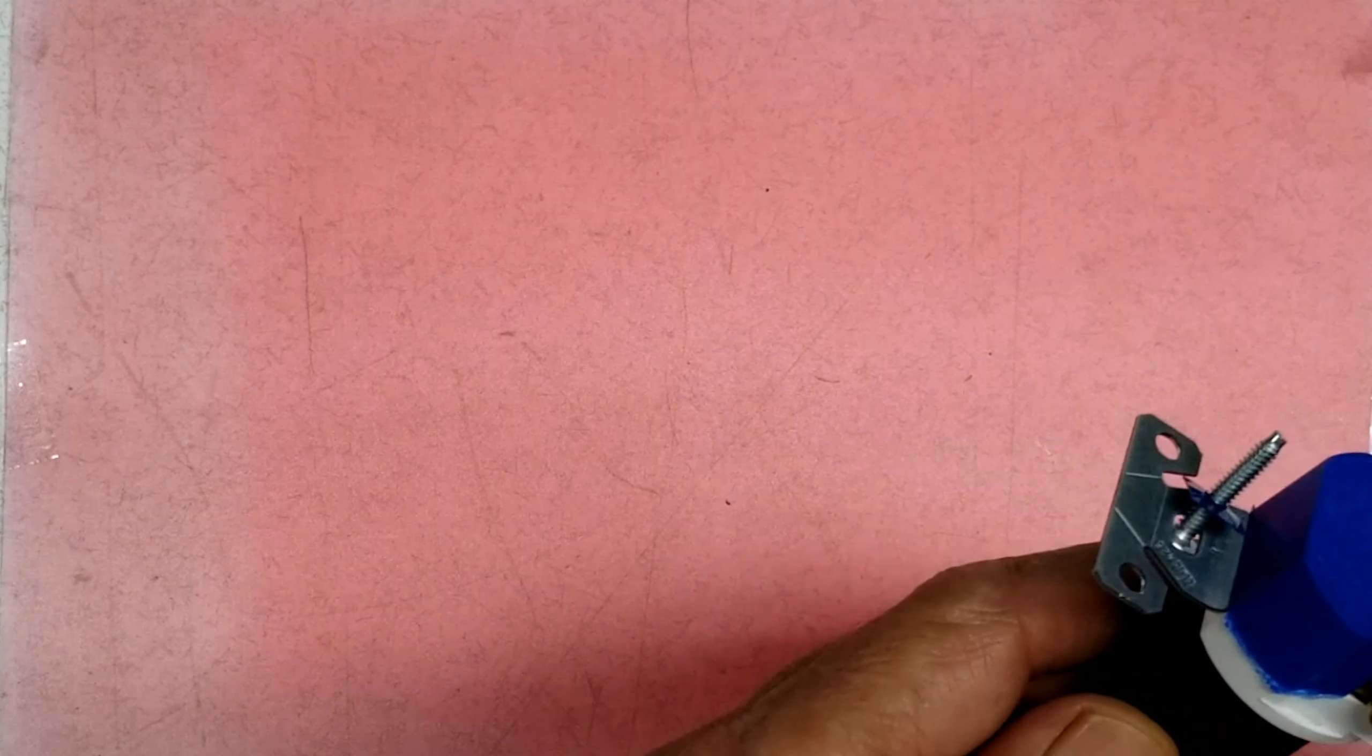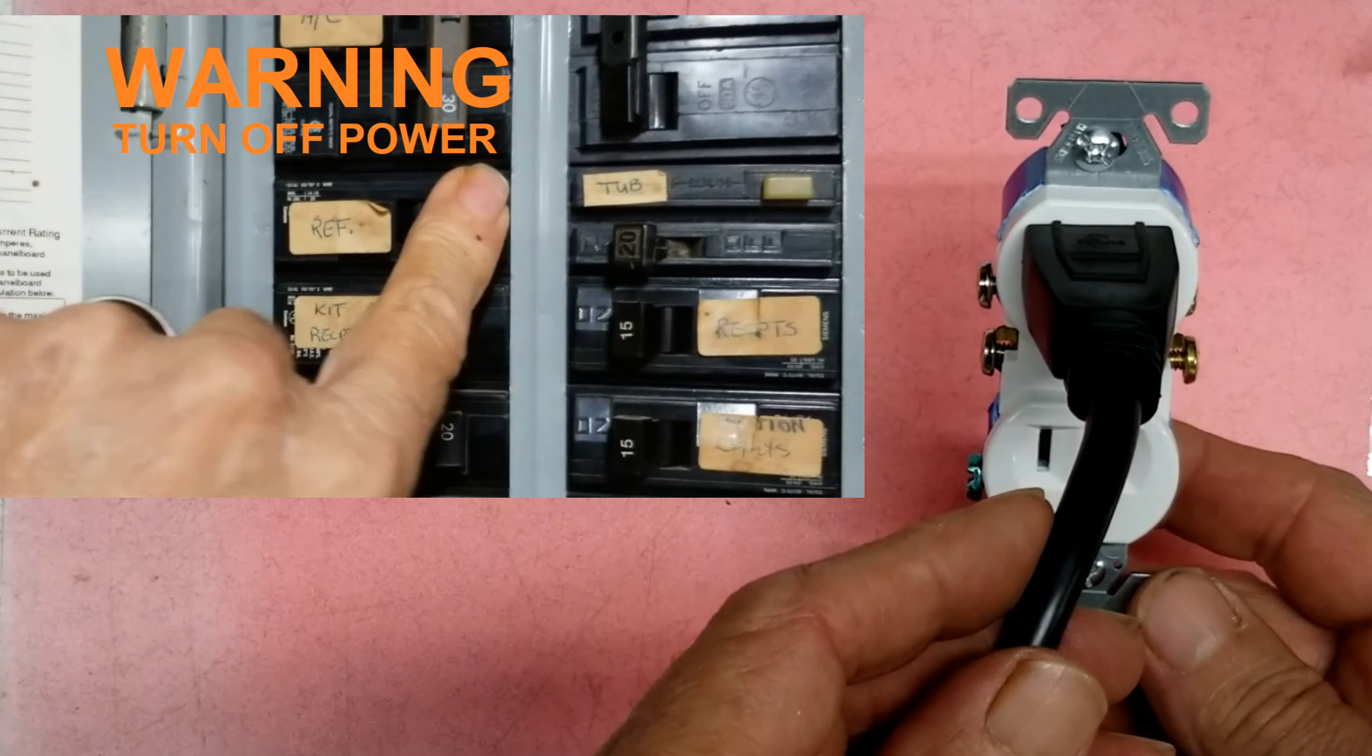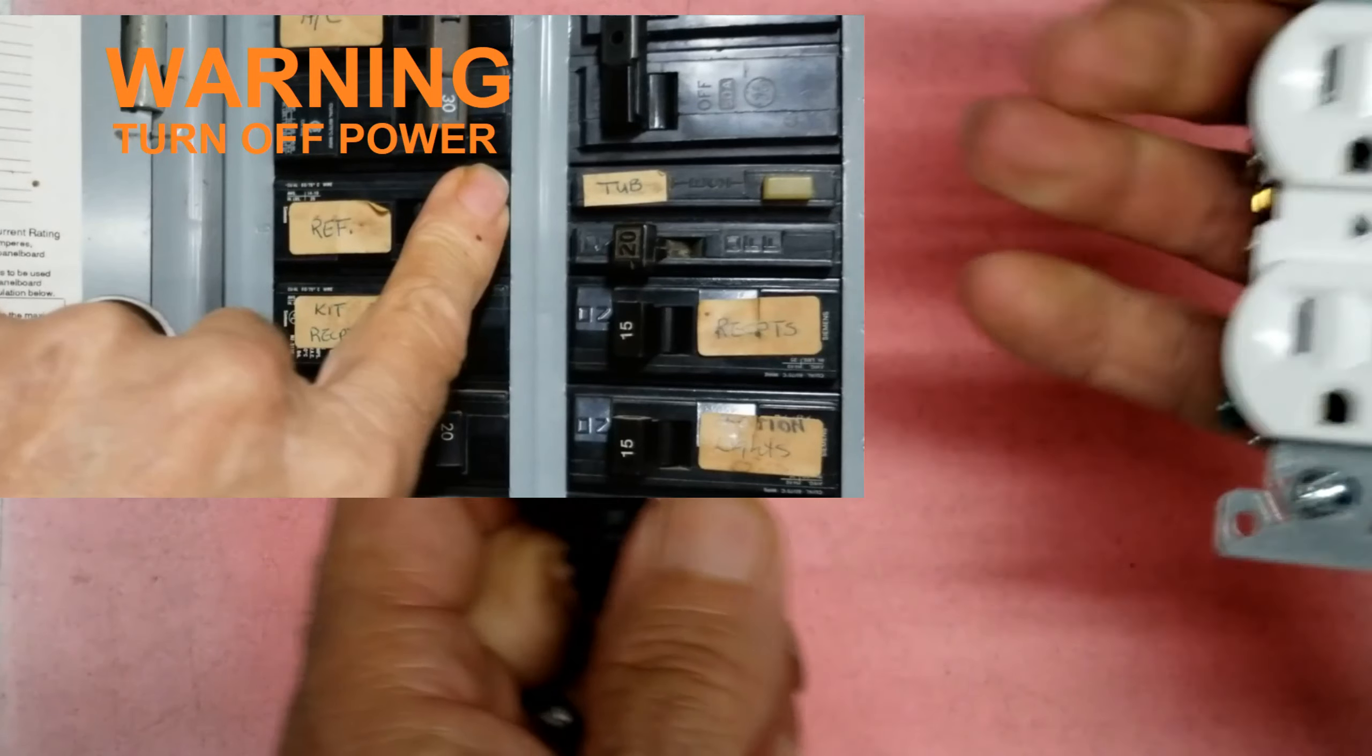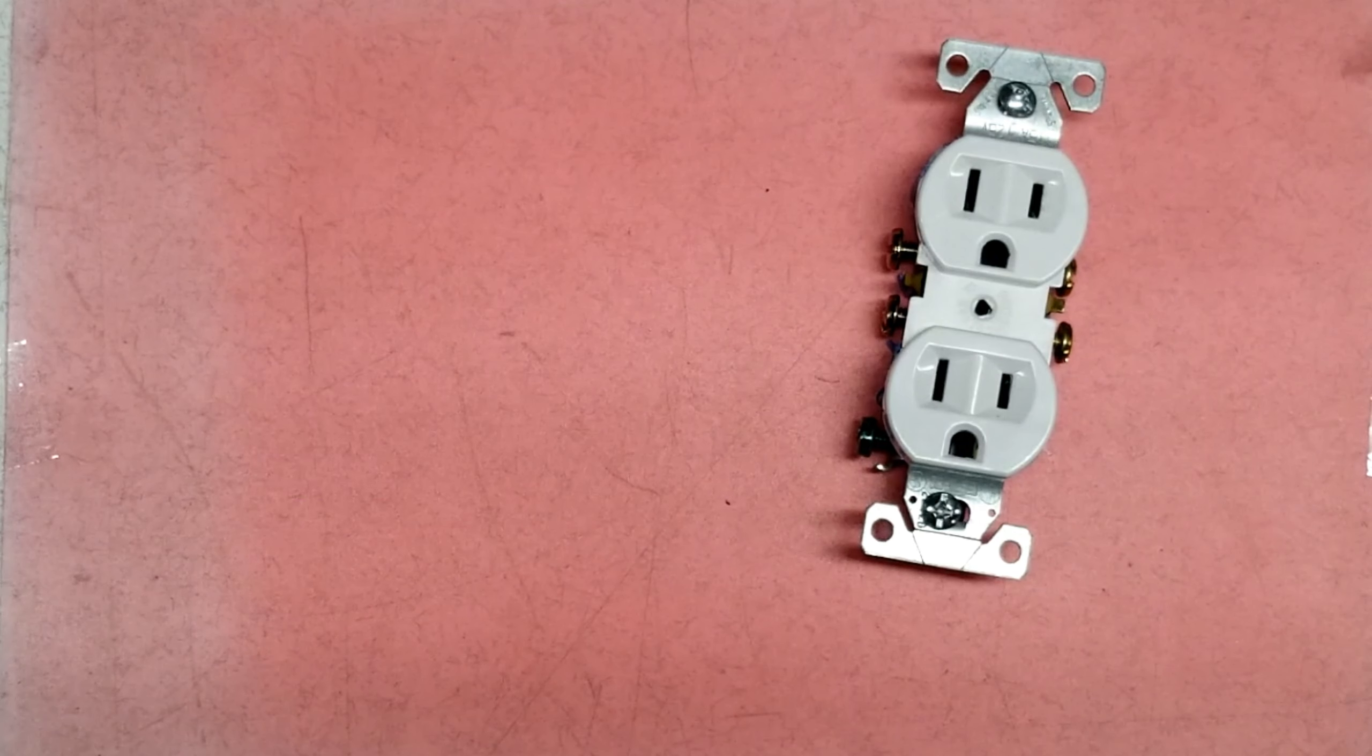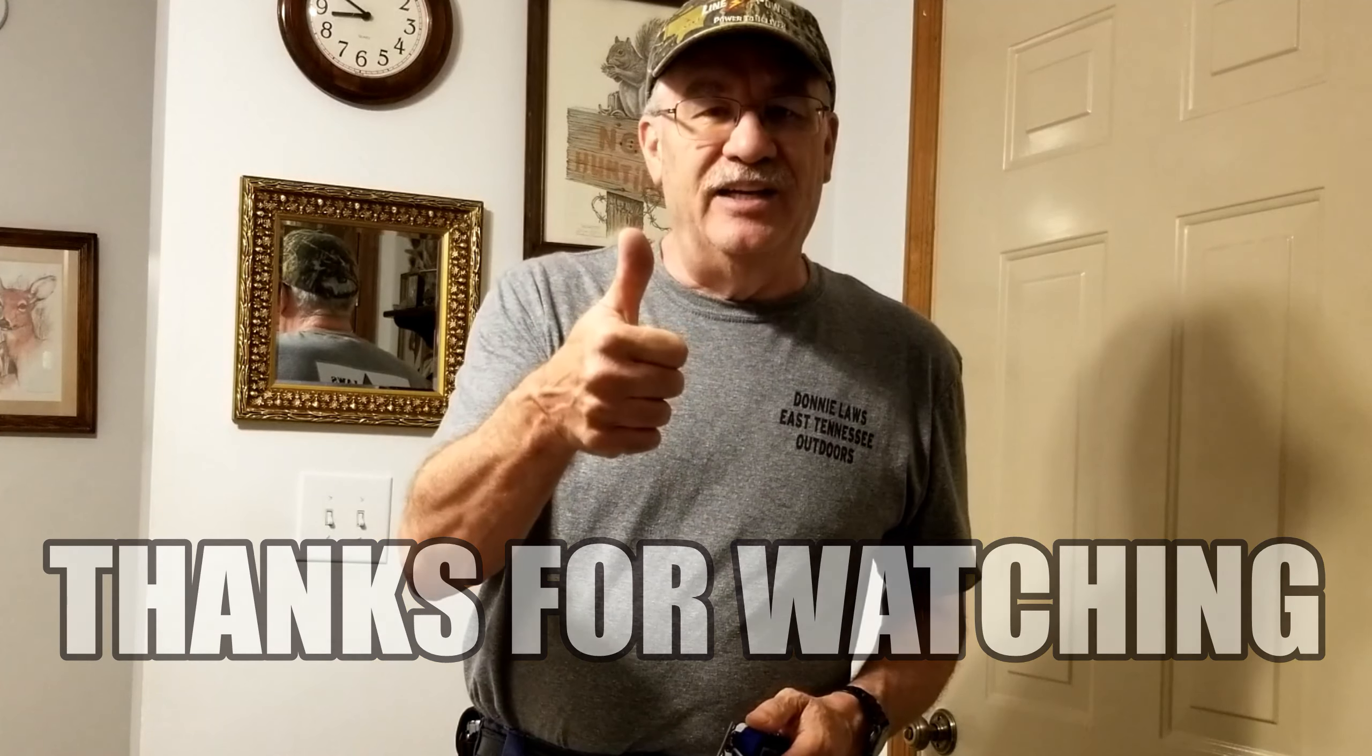So that's just some basics on these outlets. But the main thing is, make sure there's no power on your circuit. And change it out just like the wires come off, and you're good to go. So I hope these tips helped you. They're just simple tricks on a simple outlet. But these things can be dangerous. So I want to thank you for watching, and I'll see you next time.